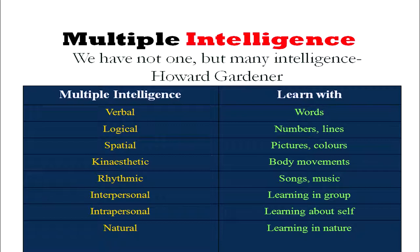Interpersonal intelligence involves those who like to work in a group, who feel uncomfortable when they are alone. But there are other people who want to live alone — they feel uncomfortable in groups. They learn about themselves more than they learn about others. And then we have natural intelligence, which is learning about nature, learning in nature — these people are comfortable playing in nature. So you have different types of intelligence now.